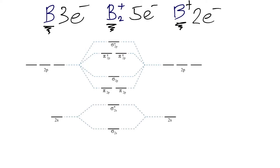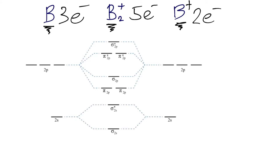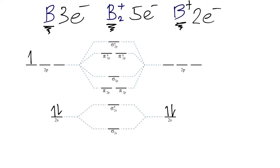Now we can fill in these electrons into our atomic orbitals on the left and the right. We have the 2s and the 2p atomic orbitals, and we start filling at the lowest energy atomic orbitals first according to the Aufbau principle. On the left we have three electrons: two fill the 2s and one goes into the 2p. On the right we have two electrons, which just fill up the 2s with nothing going into the 2p.